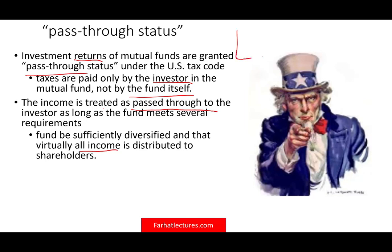It's important to understand why the fund must distribute income. If the mutual fund company keeps the income, the income is not taxed. Uncle Sam says no — the mutual fund company is making capital gains and not distributing the income. If that's the case, the mutual fund doesn't pay taxes, so it's like hiding your taxes. In order to get that pass-through status, you have to distribute that income to shareholders.